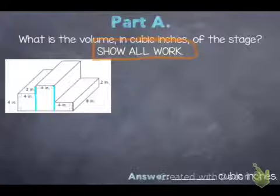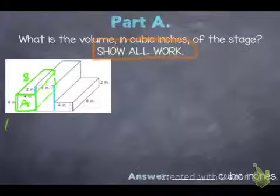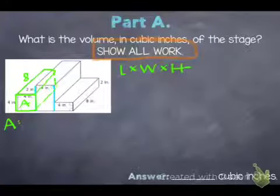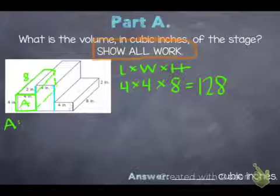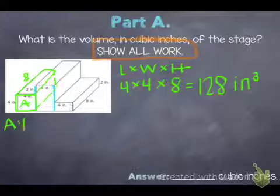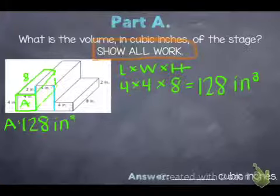The first one is over here where we've got a front end that's 4 by 4, and the depth is 8. I'm calling this part A. We'll find the volume of part A by doing length times width times height. Part A is 4 by 4 by 8. Multiplying those out gives us 128 cubic inches.